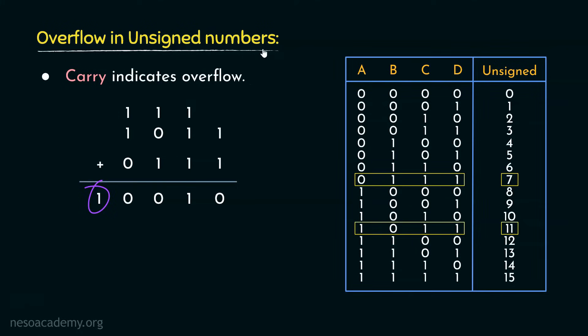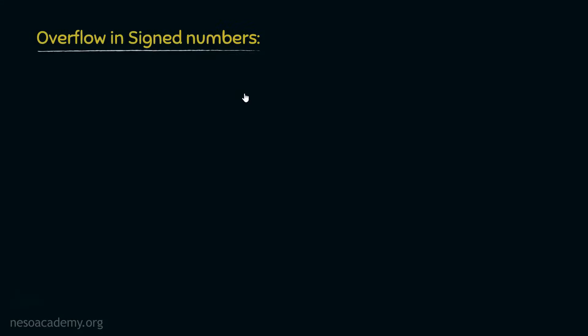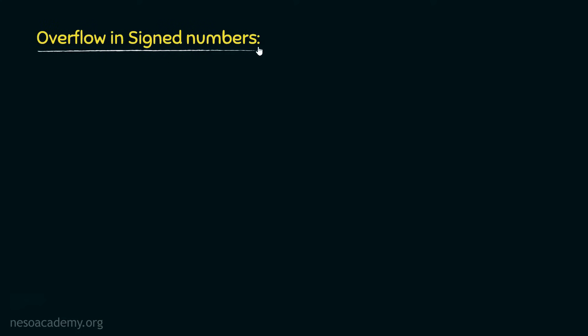In the case of unsigned numbers, the carry can indicate overflow because they are unsigned. But that's not the case for all representations — specifically not for overflow in signed numbers. Among all signed number representations, the 2's complement representation is the most popular one.